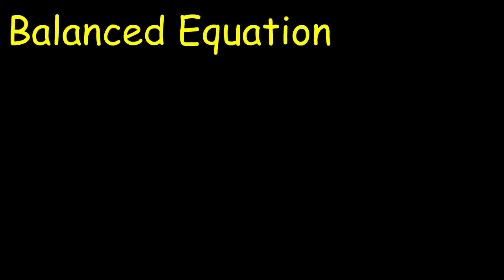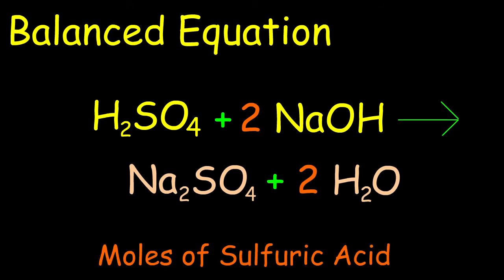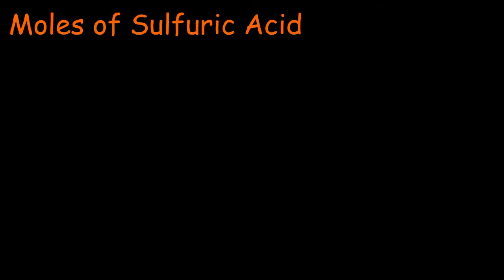To solve this question, we first write the balanced equation of the reaction. Now we must find the moles of sulfuric acid. To do this, we convert the volume to liters and then use the relationship N equals V times C.